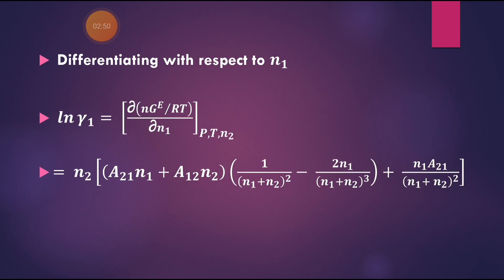Differentiating with respect to n1 for a binary system: ln γ₁ = ∂(nGE/RT)/∂n1 at constant pressure, temperature, and n2, where n2 is the mole number of species 2.